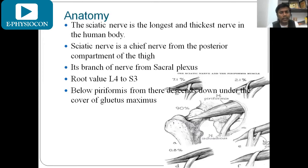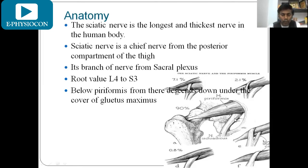About sciatic nerve anatomy: the sciatic nerve is one of the thickest and longest nerves in the human body. It is the chief nerve of the posterior compartment of the thigh, a branch from the sacral plexus with root values L4 to S3. Both the lumbar plexus and sacral plexus share this nerve. It has two components: a tibial component and a common peroneal nerve component. It descends below the piriformis muscle.